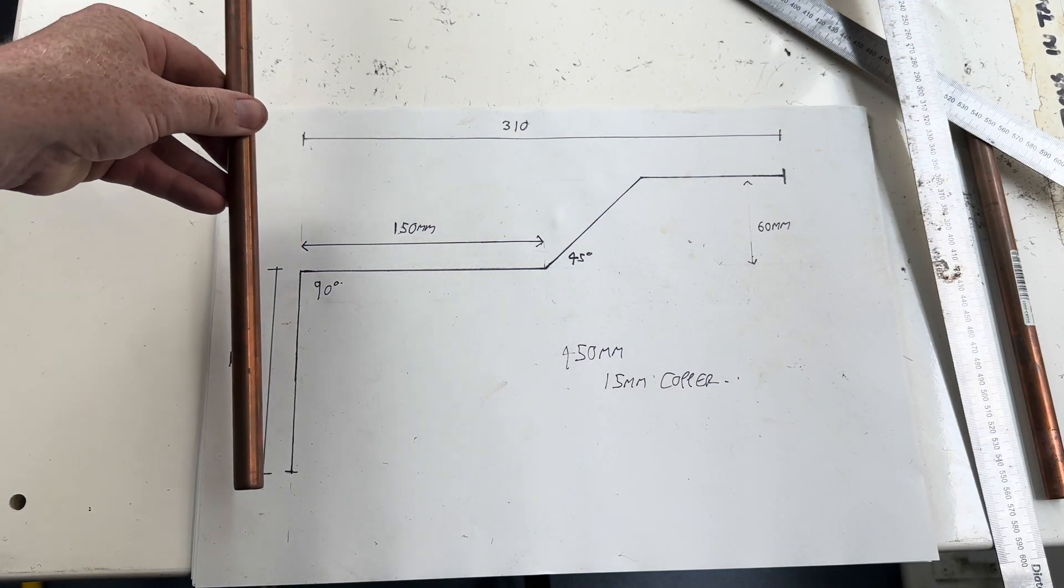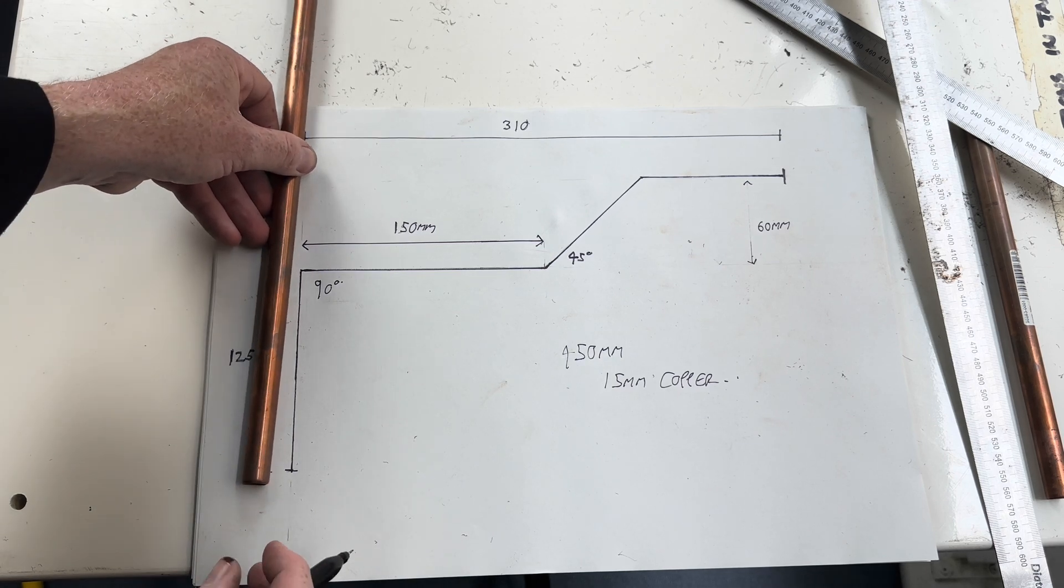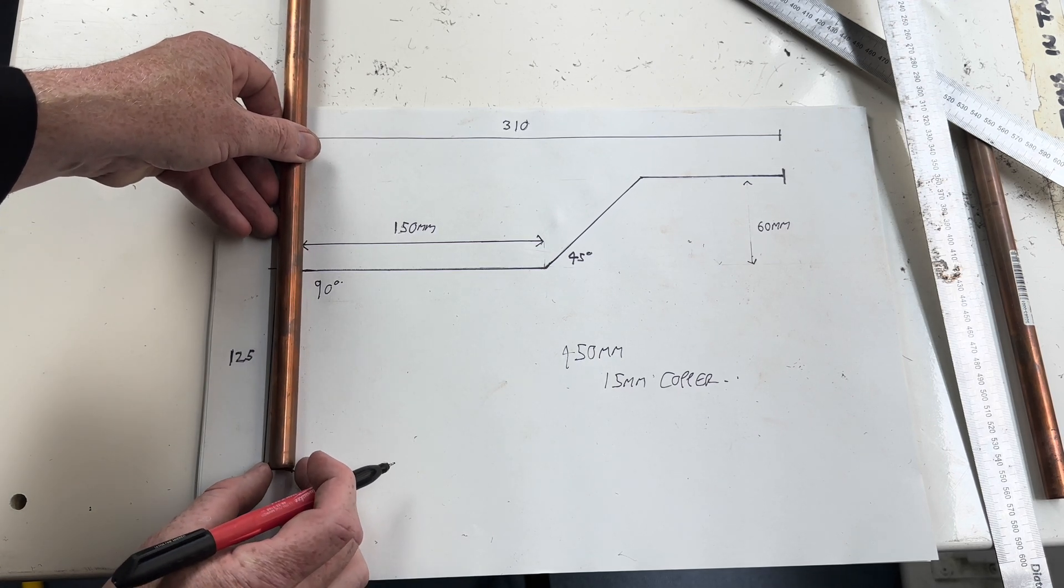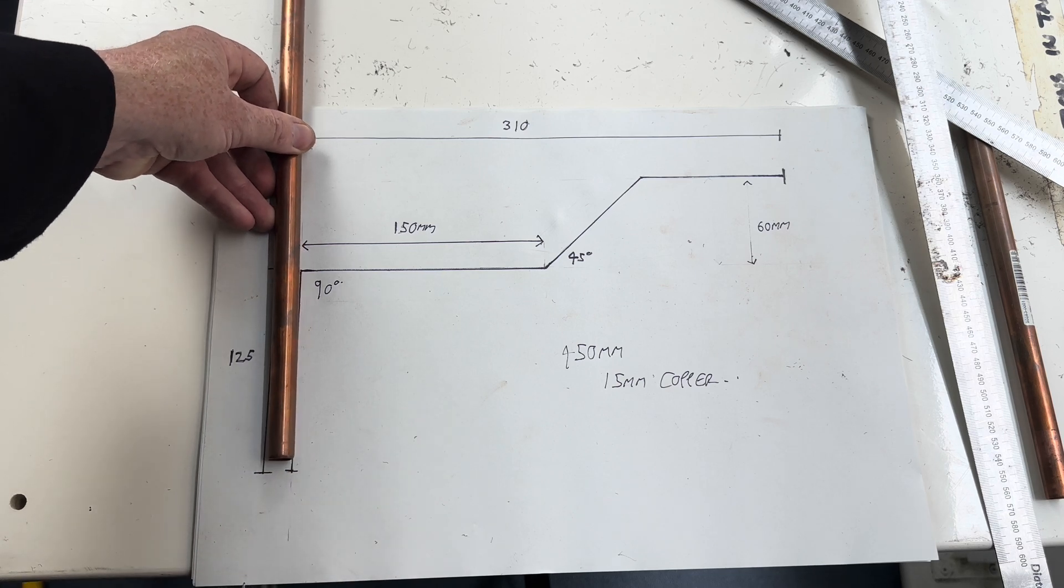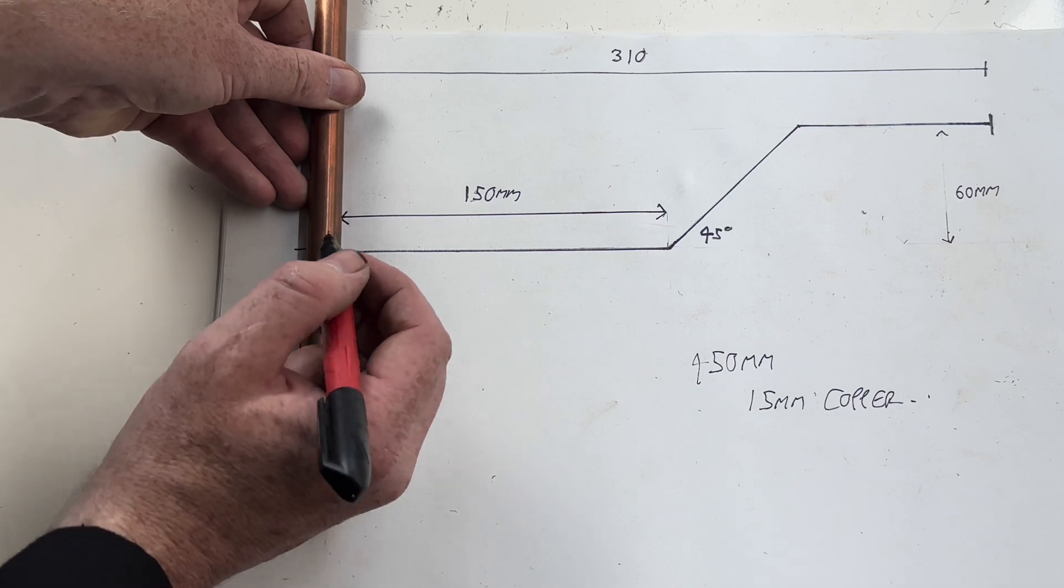Place your cut pipe on the bottom of the 90 degree bend. We're going to do the 90 degree bend first because that's easier to measure out and get right.